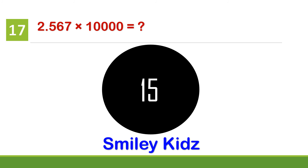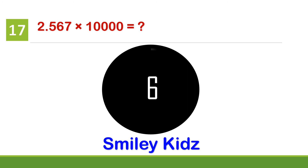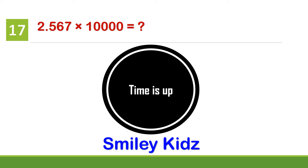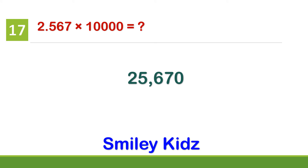Question number 17. 2.567 multiplied by 10,000 is? Your time starts now. Your time is up. The correct answer is 25,670. 2.567 multiplied by 10,000 is 25,670.